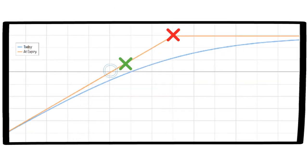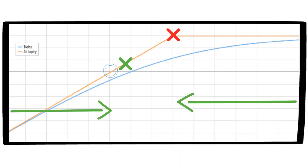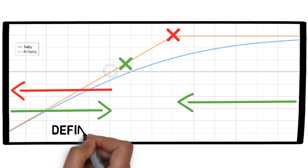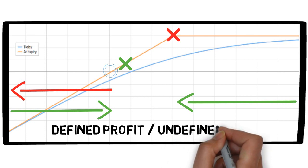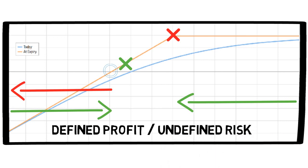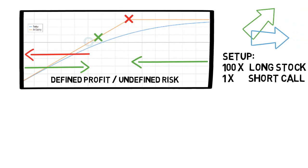Right below that you can see the break-even point. The max profit is achieved if the underlying asset's price rises up to or above the strike price of the short call. If the underlying asset's price falls, the covered call will end with a loss. This means a covered call is a defined profit and undefined risk strategy — or theoretically not truly undefined risk since the stock price can't go below zero, but it's still a pretty big loss if the stock goes all the way down to zero.